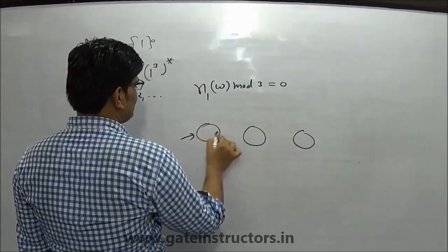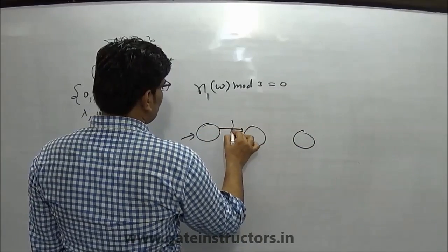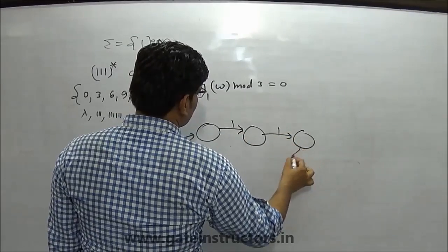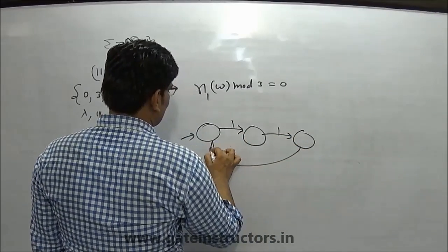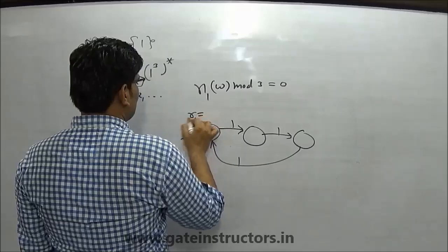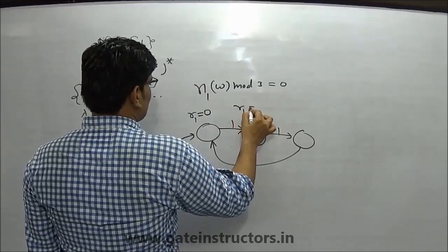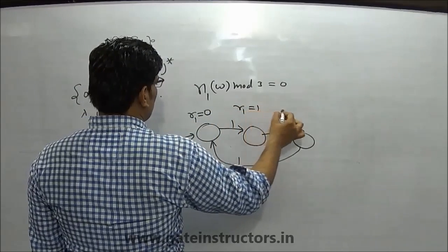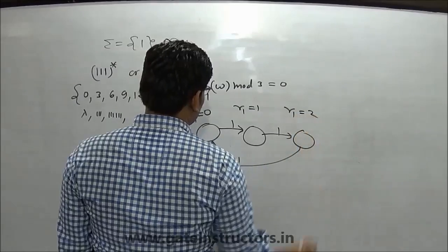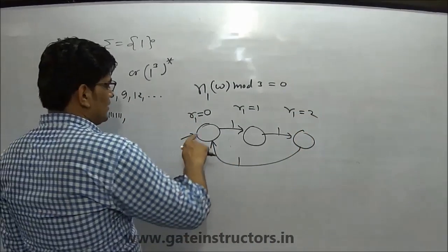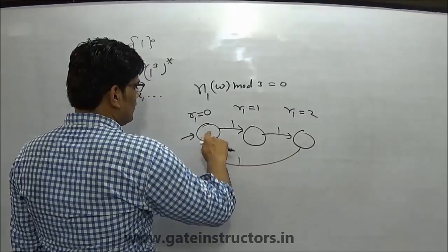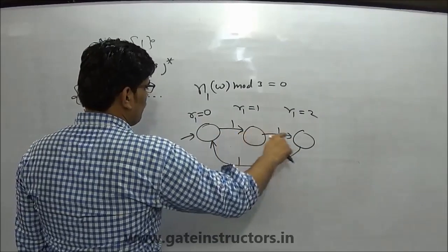Then you have three states. This is my starting state. You will create states for the remainders: one state for when you have seen a count of ones giving remainder 0, another state for remainder 1, and another state for remainder 2. These are the three states of the DFA, counting from 1 to 2 to 3.